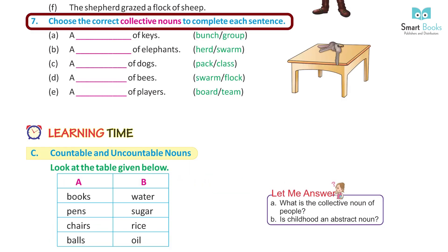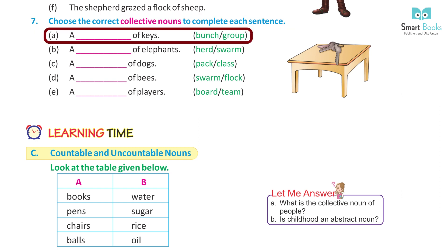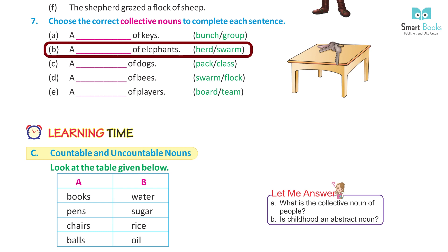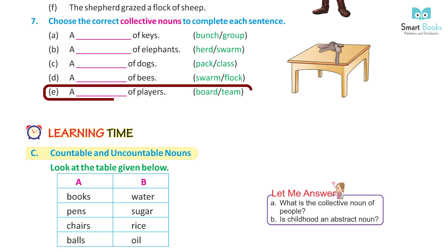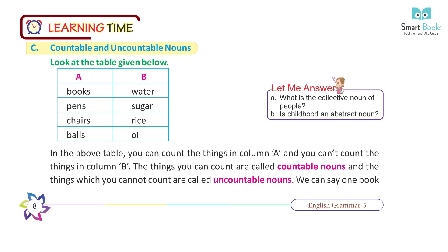Question 7: Choose the correct collective nouns to complete each sentence. A) A bunch of keys. B) A herd of elephants. C) A pack of dogs. D) A swarm of bees. E) A team of players.